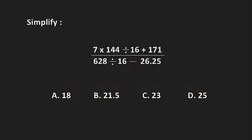Hello friends, here is a question from simplification in which the numerator part is 7 × 144 ÷ 16 + 171 and the denominator part is 628 ÷ 16 - 26.25.